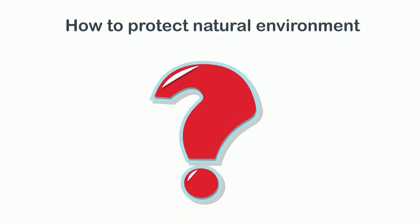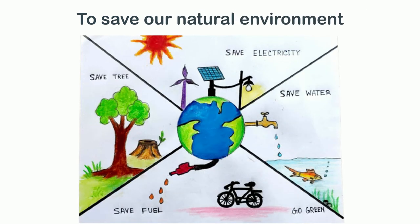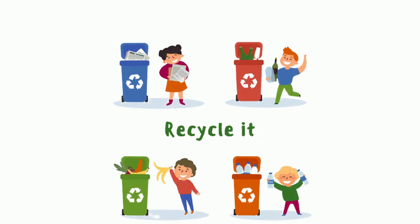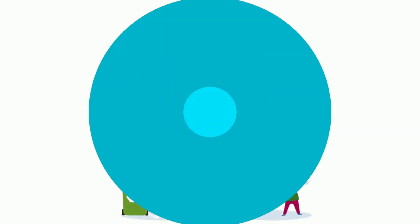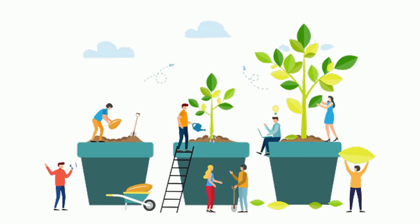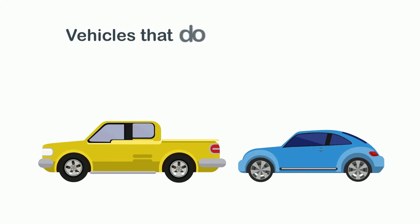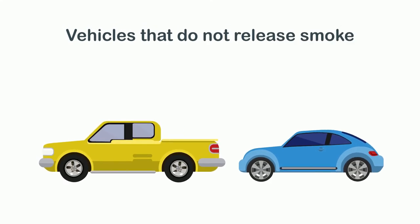How to protect natural environment? To save our natural environment we can do different things, like recycling used items instead of throwing them, reducing the use of wooden material, increasing plantation of trees, and using vehicles that do not release smoke, etc.